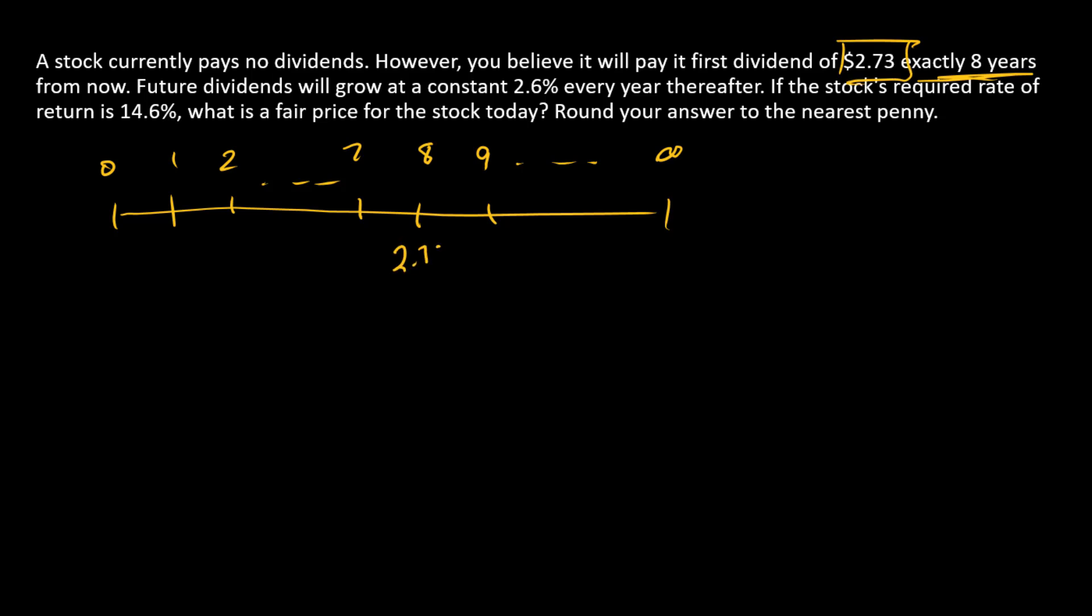That goes right here on the timeline. And then after year eight, what's going to happen? Future dividends from that point on are going to grow at 2.6% per year. So g equals 2.6% per year forever. This is what we would call constant growth.